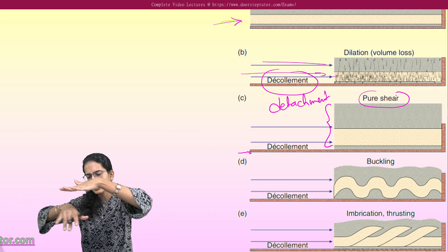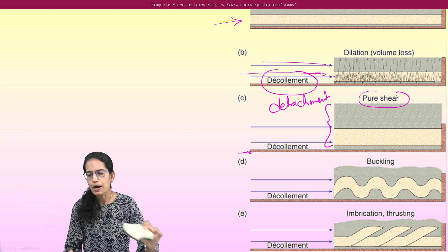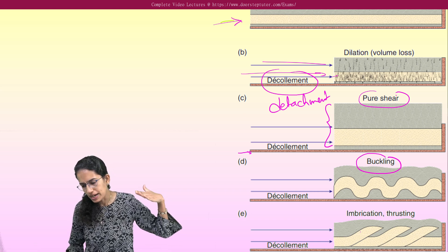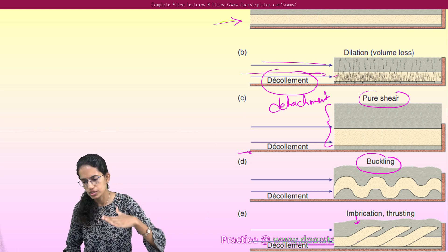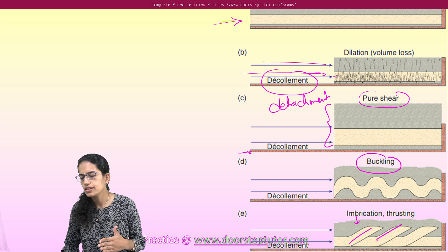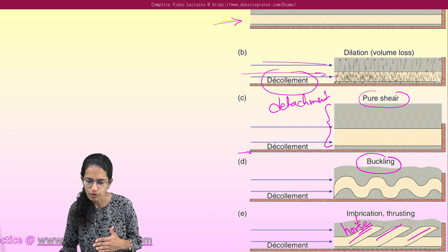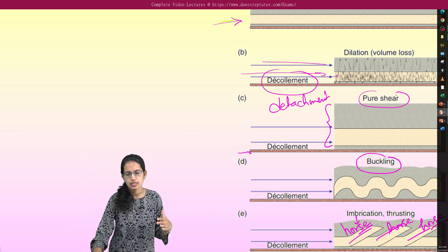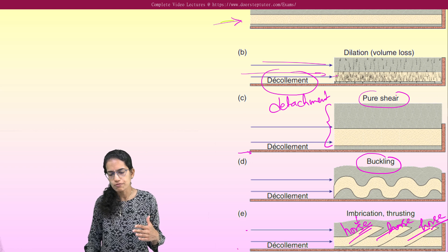When it is moving it creates folds within it, and this is called buckling. When this buckling is further strong there is imbrication or thrust, and each of these legs is called a horse — they appear in the shape of a horse. So under imbrication or thrusting there is the horse, and there is a detachment from the bottom layer which occurs.